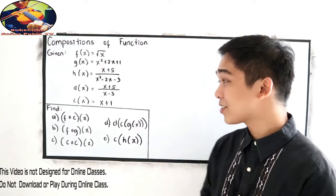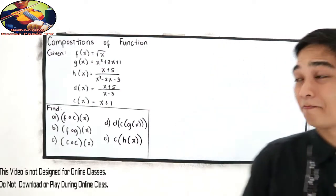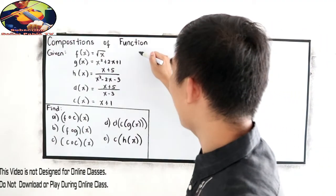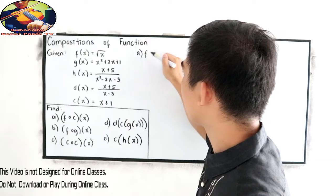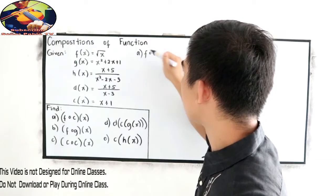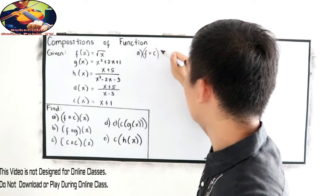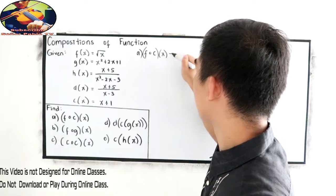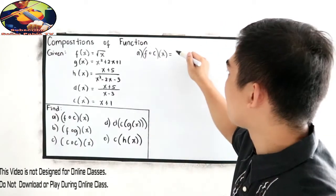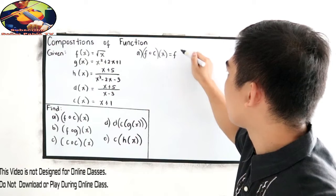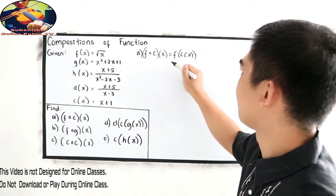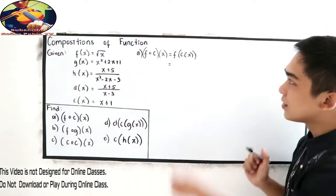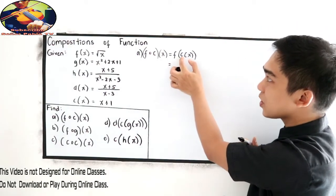Now let's check or let's solve letter a. Letter a, f composed of c of x. We know that the equivalent of that is f of c of x. So we are going to evaluate first c of x.